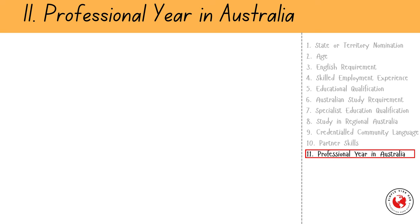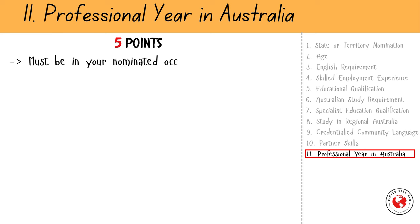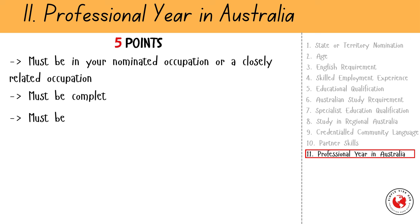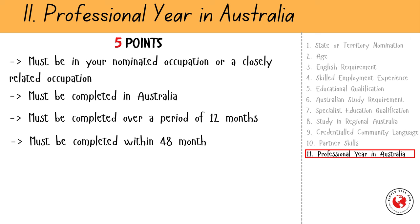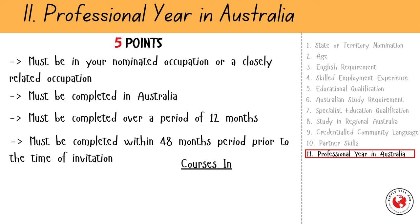The last factor is professional year in Australia. Completing a professional year in Australia in your nominated occupation can give you 5 points. To be eligible, your professional year must be in your nominated occupation or a closely related occupation, completed in Australia over a period of 12 months and within 48 months prior to the time of invitation. Professional year programs include courses in Accounting, IT, and Engineering.